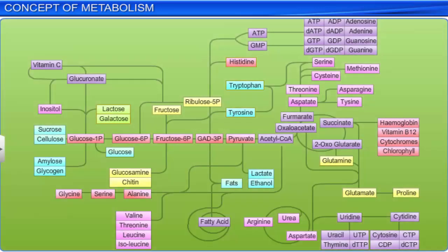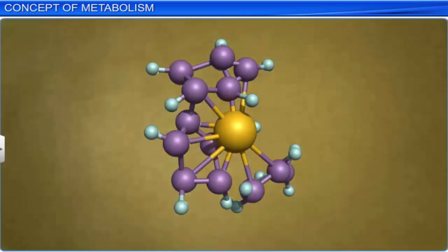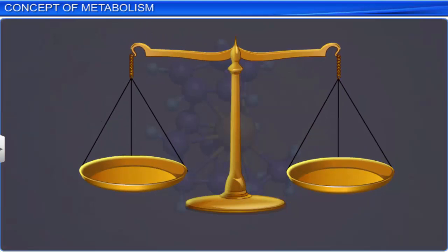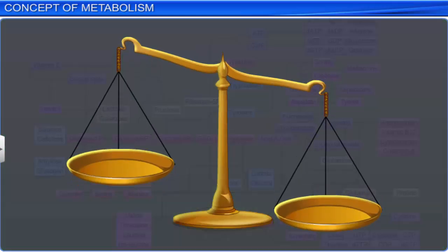Moreover, these biomolecules are constantly a part of the metabolic process. Any chemical or physical process moves naturally to equilibrium. However, systems at equilibrium cannot perform work. Therefore, the living state is a steady state or a non-equilibrium state, which is essential for living organisms to be able to work constantly. The living state or non-equilibrium state is attained by energy input through metabolism. Hence, metabolism and the living state are synonymous, and one cannot exist in the absence of the other.